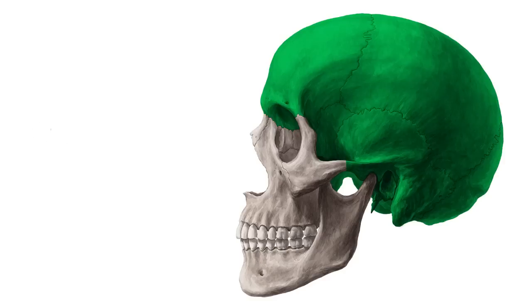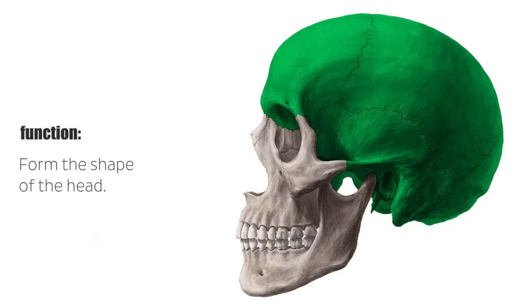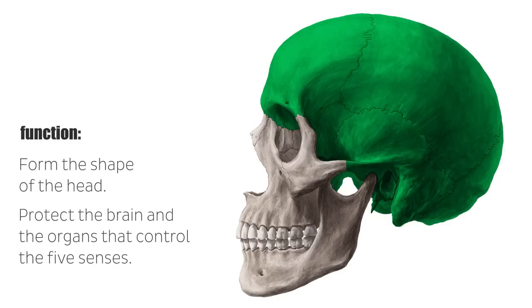The primary functions of the neurocranium are to form the shape of the head, and to protect the brain and the organs that control the five senses — the eyes, the ears, and the areas of the brain that control touch, taste, and smell.